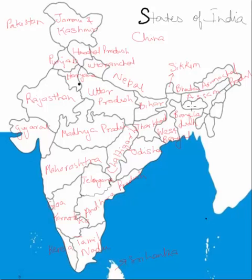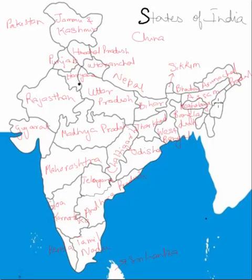To the south of Arunachal Pradesh is a three-pronged shaped state — that is Assam. To the south of Assam is a state with Assam to the north and Bangladesh to the south; it looks like a cloud, and you can use that to remember its name — Meghalaya, since 'Megh' in Hindi means clouds. The state bordering Bangladesh to its western side is Tripura.